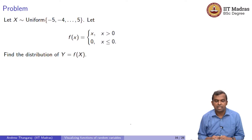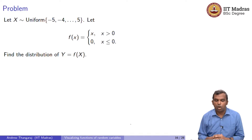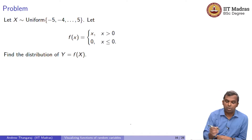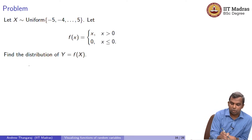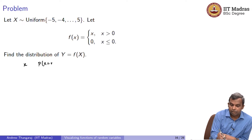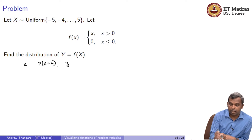Hello and welcome. Let us do a couple of quick problems now that we saw how to deal with this table method. Here is a problem where X is uniform from minus 5 to 5. If you want to write the table — probability of X equals x — there is a function f of x that is given. Let me write down Y here for you.